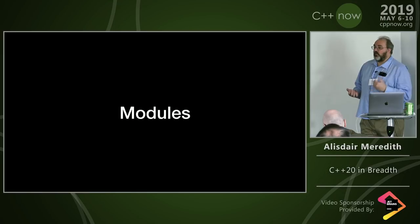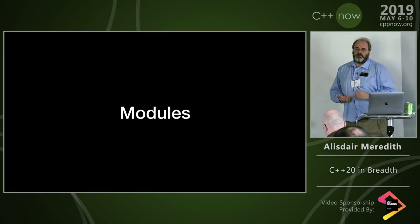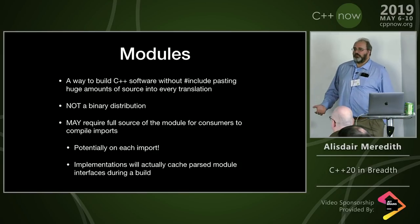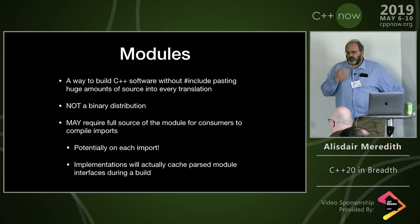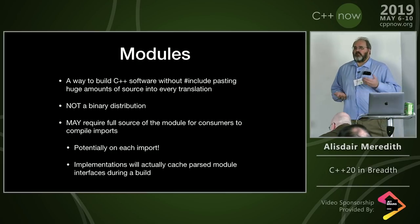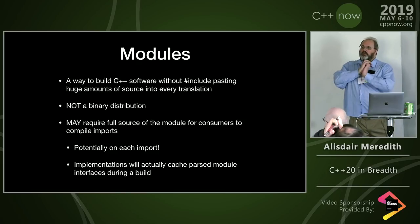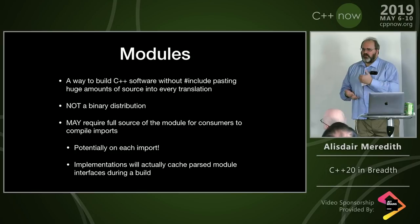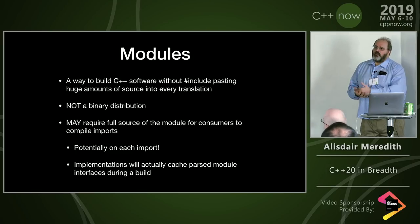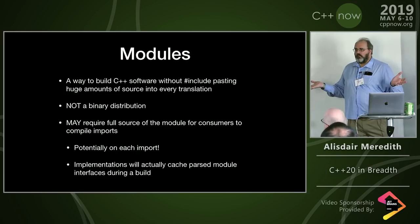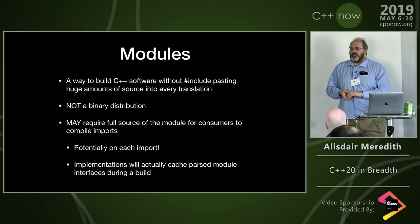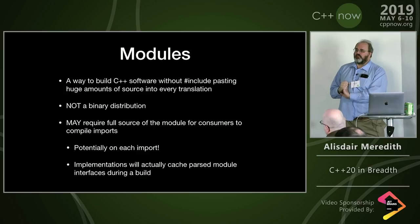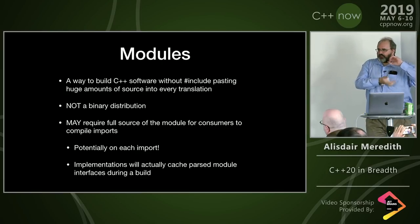Now the new stuff — and probably the number one requested feature for C++: modules. The essential model is a way to build software without relying on #include, which recursively copy-pastes millions of lines of source into every translation unit. What it is NOT — as people might expect from other languages — is a binary distribution format. You do not compile your module and keep it as an opaque thing to distribute; it's purely a better solution to #include.